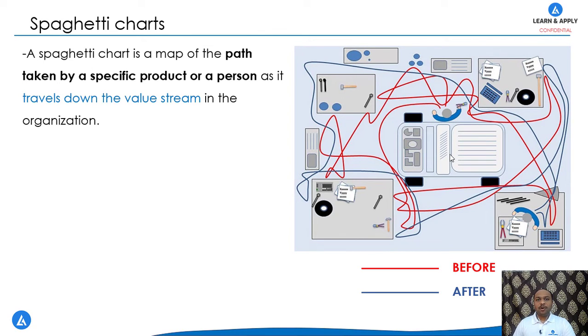This is because the shape of this diagram is similar to the spaghetti. A spaghetti chart is a map of the path taken by a person or a specific product as it travels down the value stream in the organization.